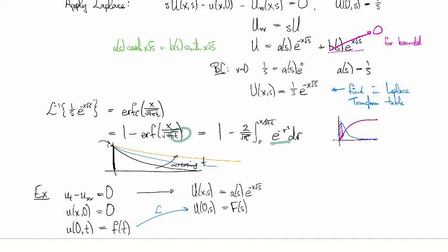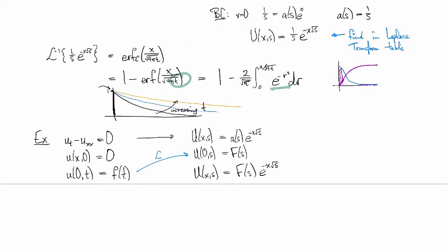Then combining those, we see that now the solution is F e to the minus x root s. And so in order to figure out what the solution is, we're going to have to invert the Laplace transform of F times e to the negative x root s. But this is a product, so this comes back as a convolution.